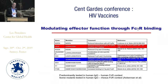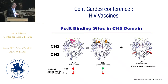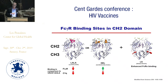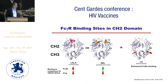We made these modifications on VRC07-523. The LALA mutation and the DEL mutations are in a region of the Fc which interacts with Fc gamma receptors. We made these on the background of the LS mutation so that we would have longer half-life antibodies. The LS mutation is in a different region which interacts with the neonatal Fc receptor and doesn't affect any of the Fc gamma receptor binding.